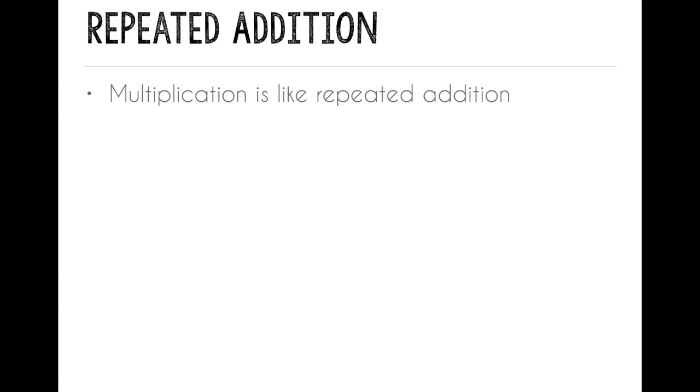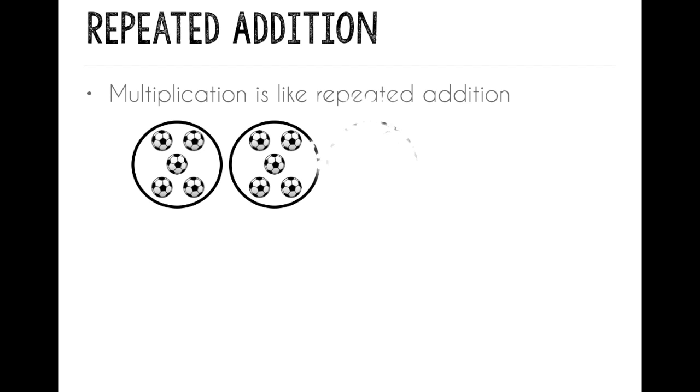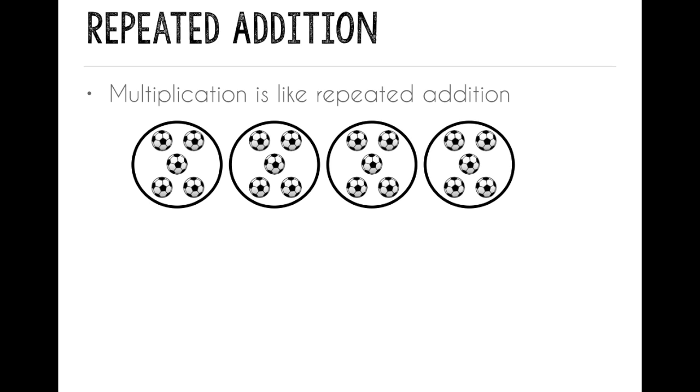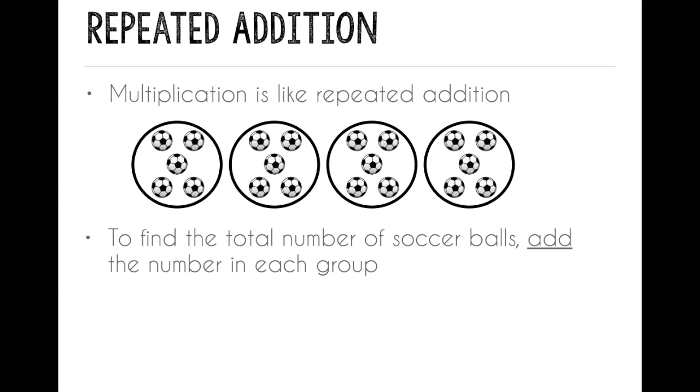Multiplication is like using repeated addition, where you add the same number over and over. If we have groups of soccer balls, I could use addition to find the total. I would add the number of soccer balls in each group. I have 4 groups of 5, so I would add 5 plus 5 plus 5 plus 5, and I would get a sum of 20. So there are 20 soccer balls.